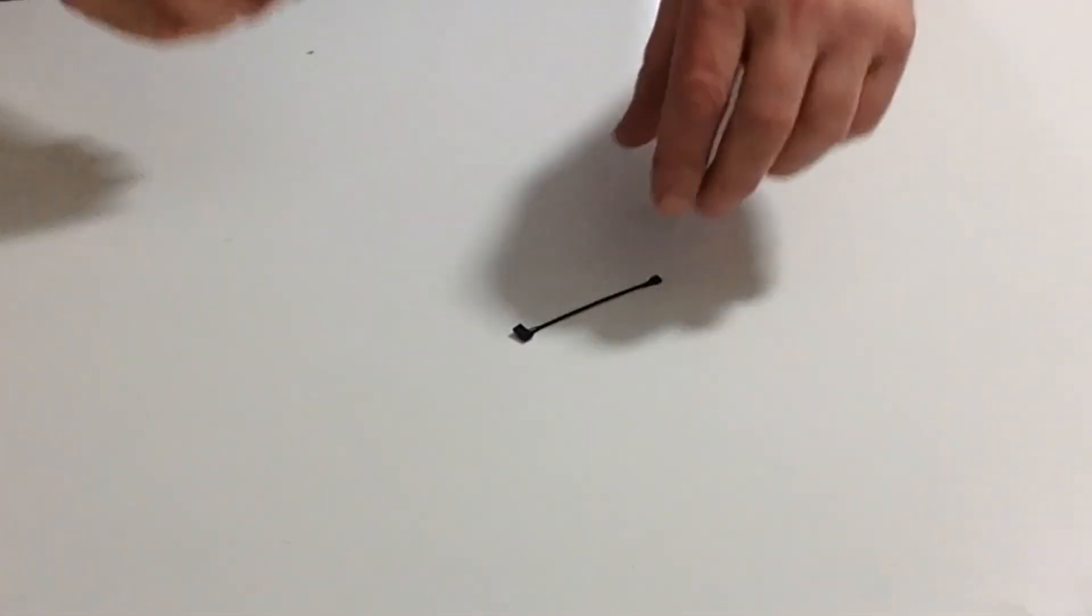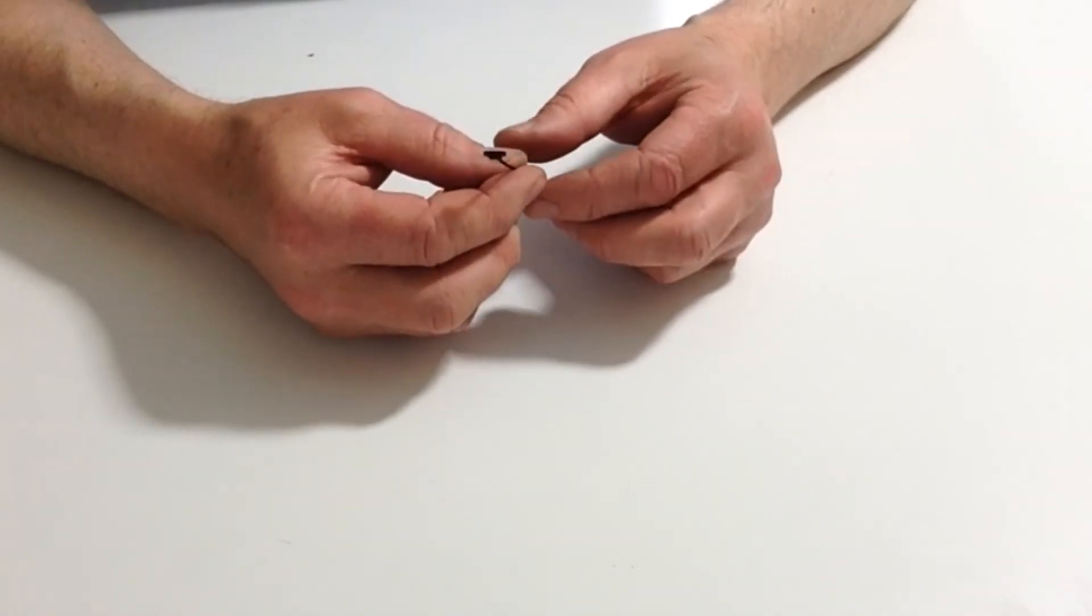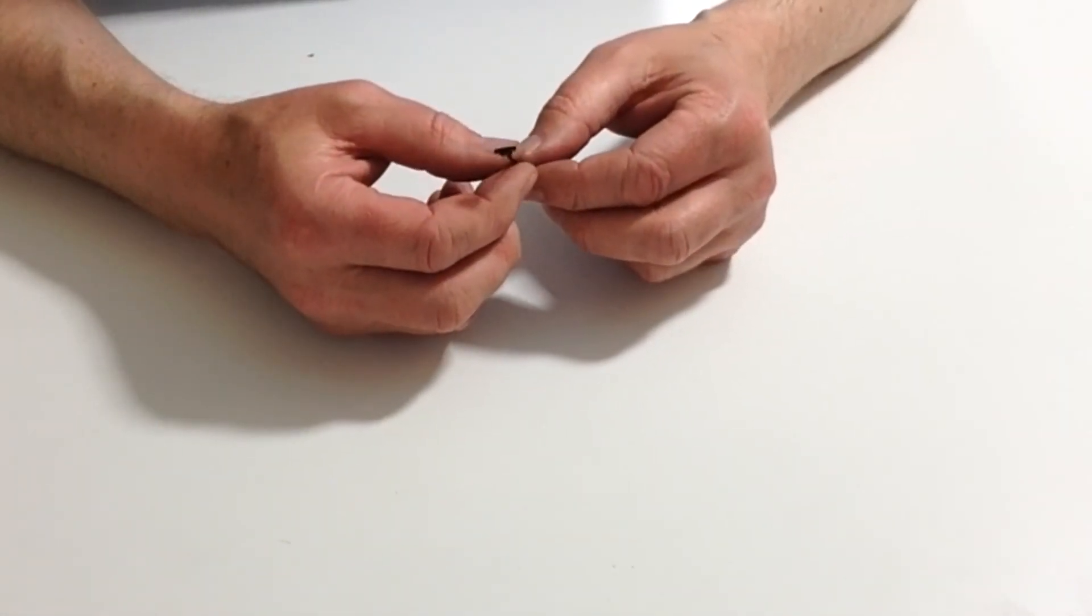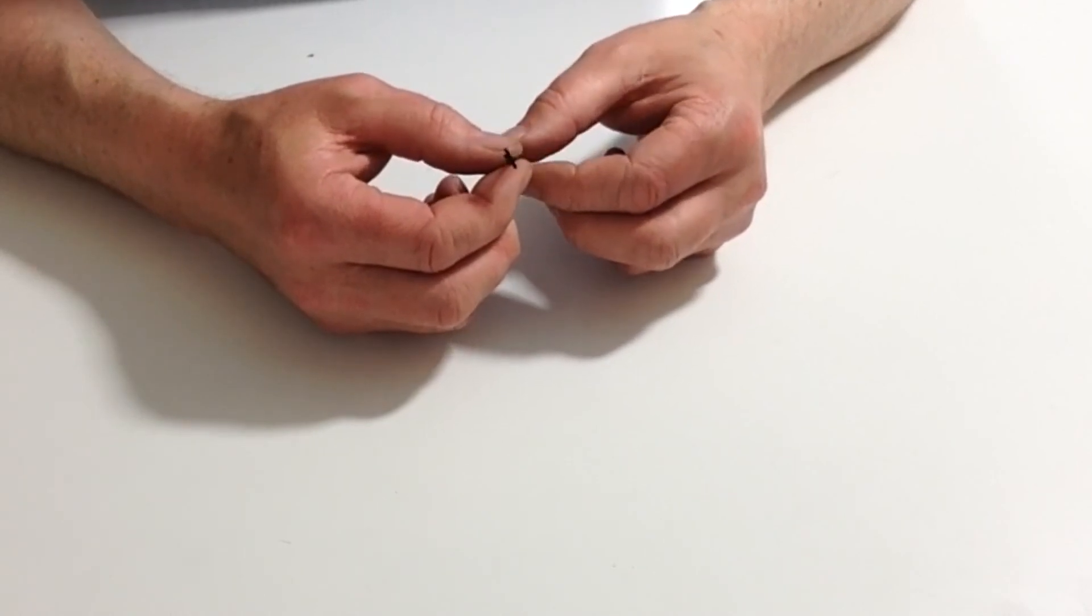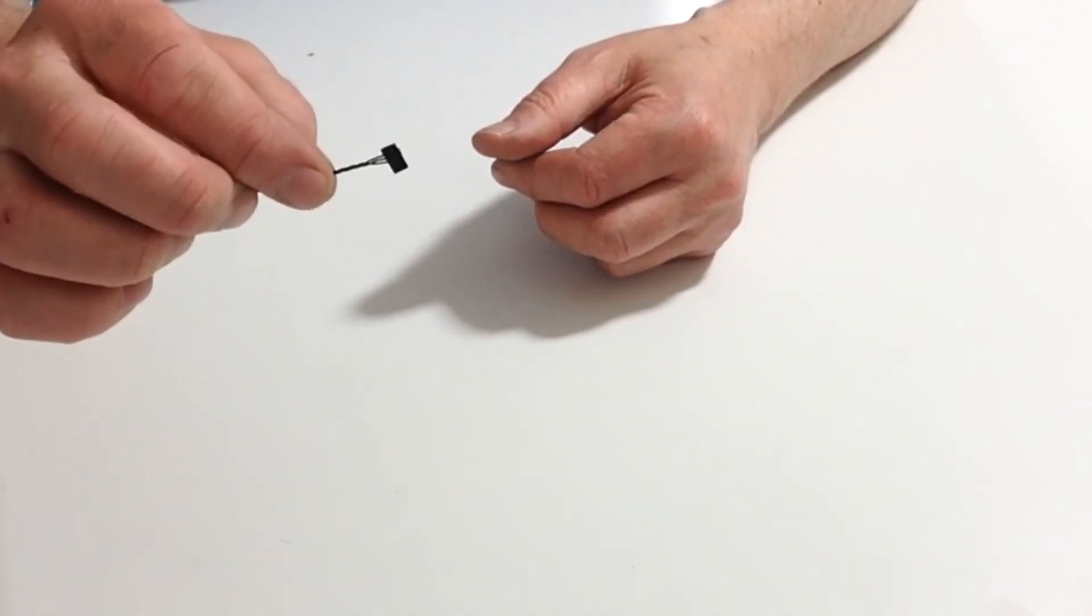For the final part of the stage, we need to prepare the servo cable. Once again, take the servo cable and take one of the small sticky pads and place that onto the servo cable.